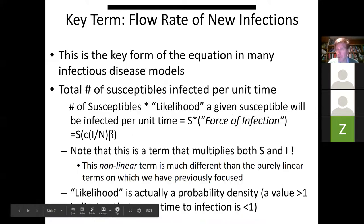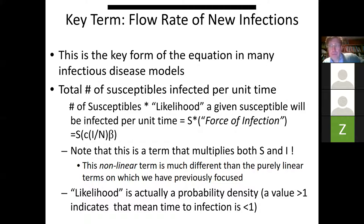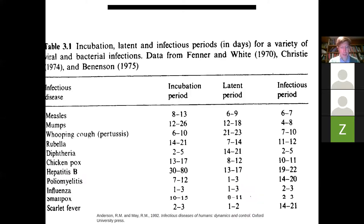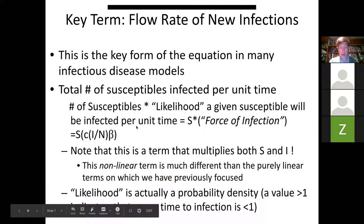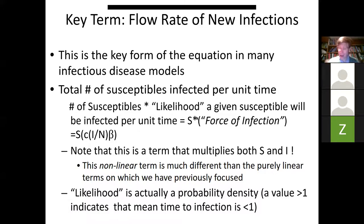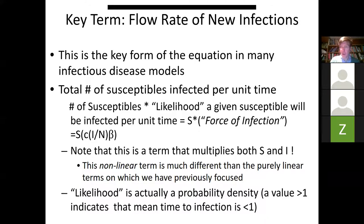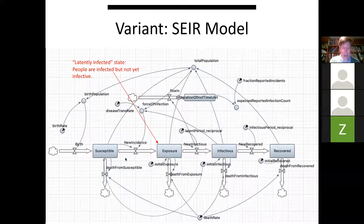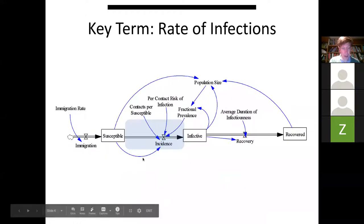This table is from the book Infectious Diseases of Humans by Anderson and May — kind of the Bible of its genre — showing the latent period, incubation period, and duration of infectiousness in days for a variety of common infections. The key term is the new infection term: S times the force of infection, which is C times I/N times beta. Here C represents the number of contacts with anyone per day; C times I/N reflects that only a fraction I/N are likely to be infectious people; and beta is the approximate chance of transmitting to any one of them. This gives the number of susceptibles infected per unit time, whether in a SEIR or SIR model.